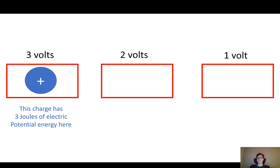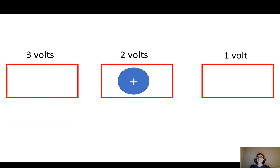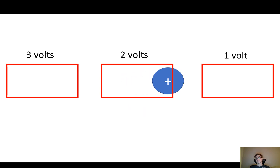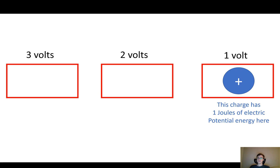So if I take this charge and I move it to a different region of space, maybe I move it to the right a little bit into this box — it has two volts — that means that this charge would have two joules of electrical potential energy. It has one less when you put it somewhere else. Finally, if you take it and you slide it to a third location where there's one volt, it would have one joule of electrical potential energy at that point.